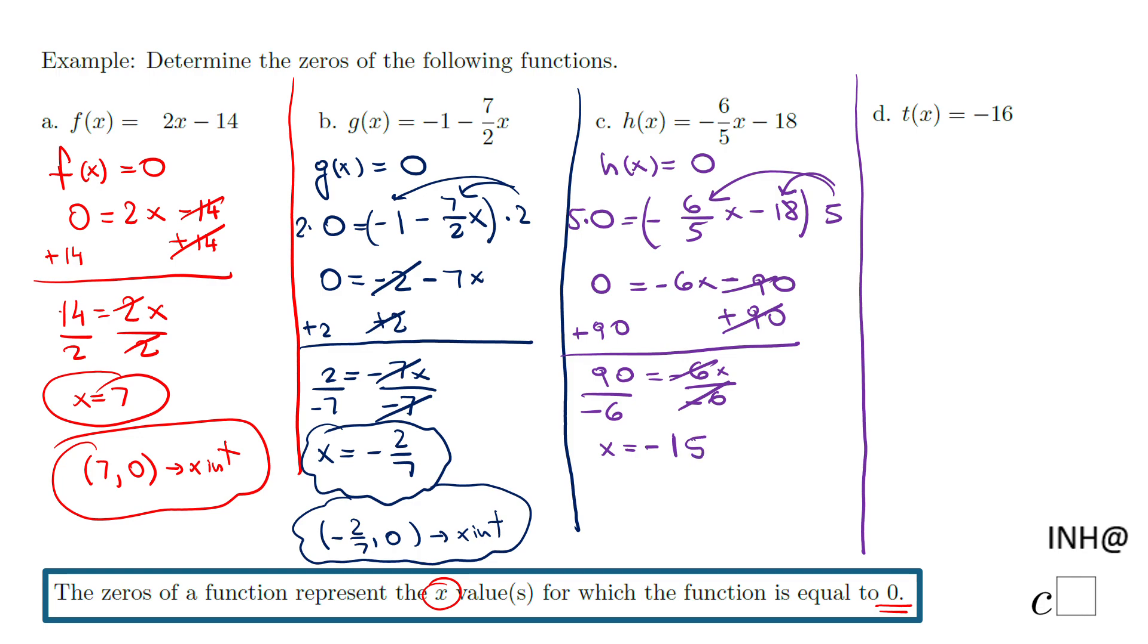And we have x equals negative 15. This is when the function h of x is zero, the x-intercept will be negative 15 and zero, in case you need that.